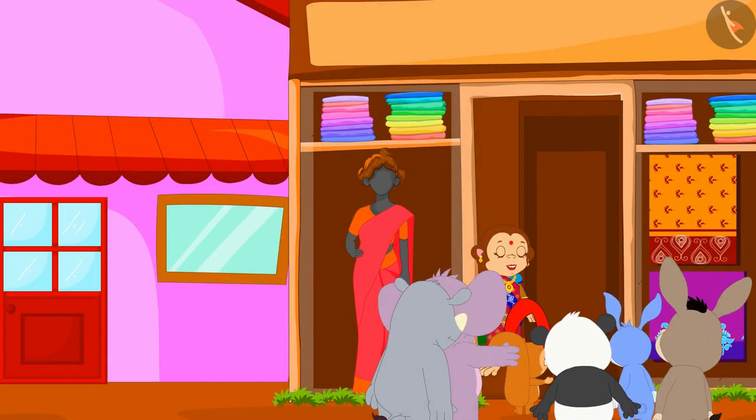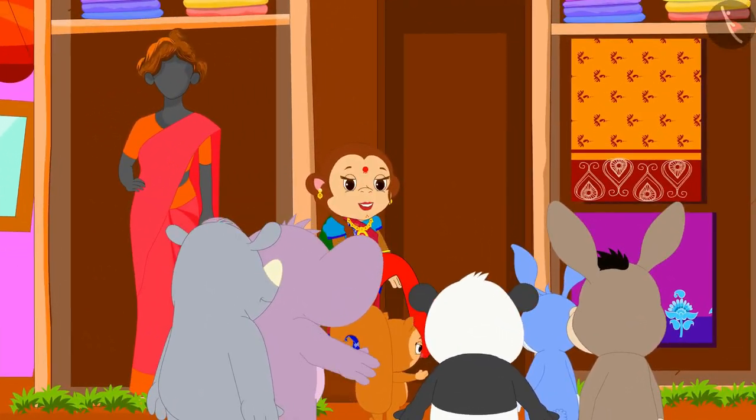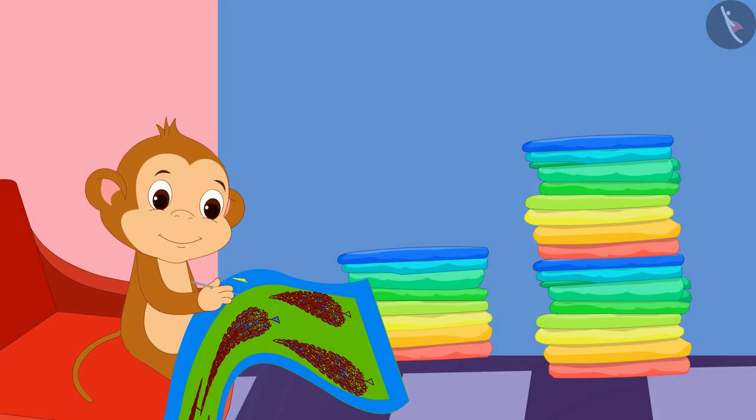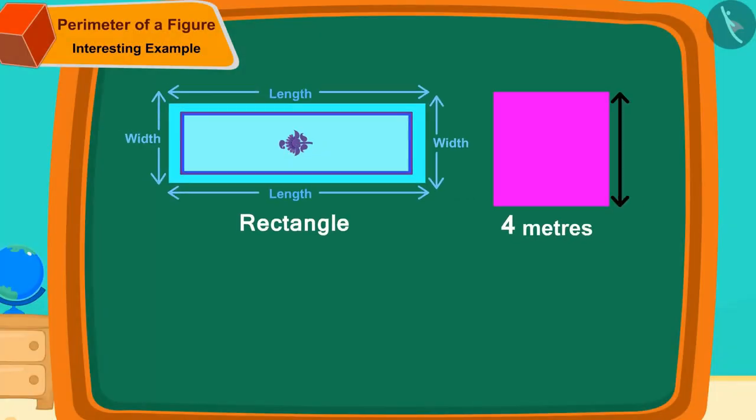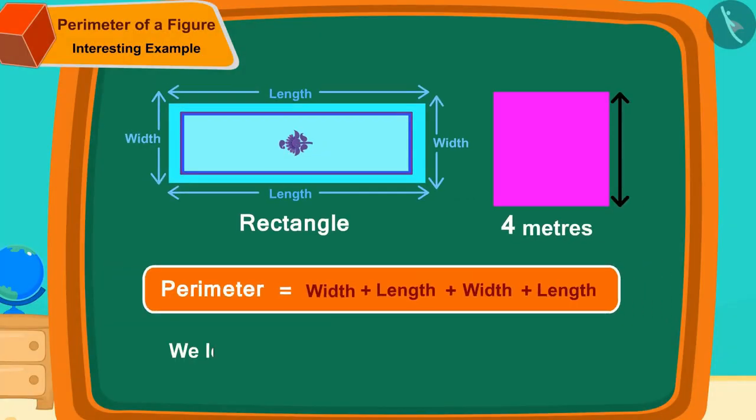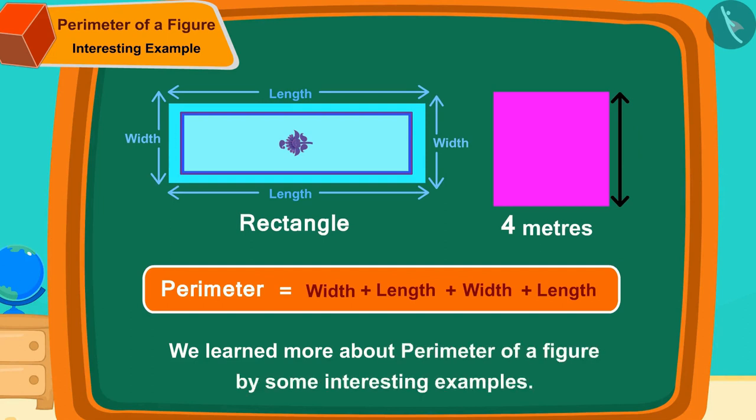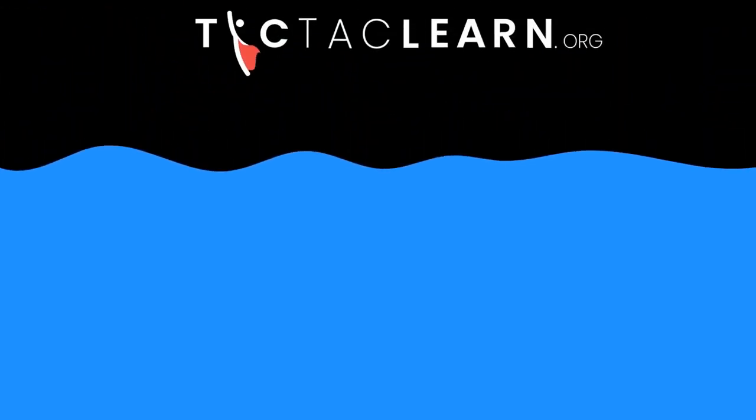Banno's shop started doing phenomenal business. So Baban also started helping her. Children, in this video we learned more about the perimeter of a figure by some interesting examples. In the next video, we will look at some of the misconceptions related to this. We'll see you next time. Bye.